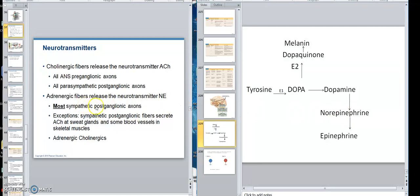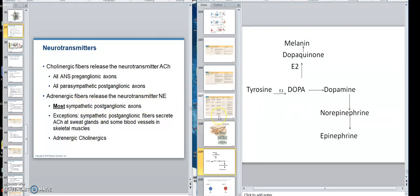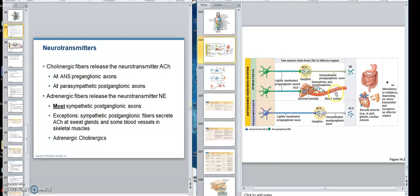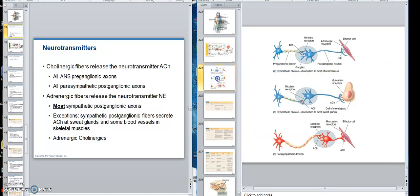But most sympathetic post-ganglionic fibers, not all of them, but most sympathetic post-ganglionic axons secrete norepinephrine. But some don't. Most secrete norepinephrine, but some secrete acetylcholine.